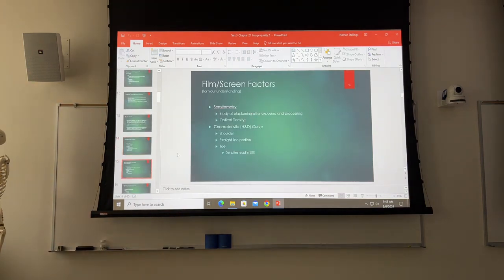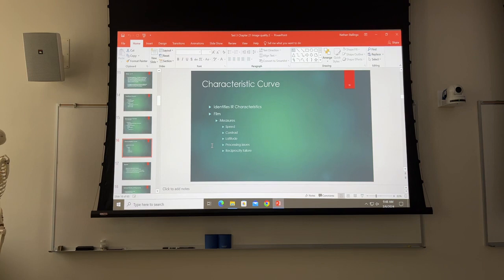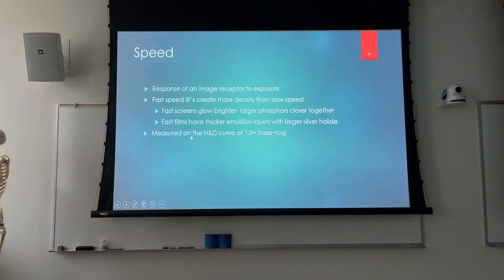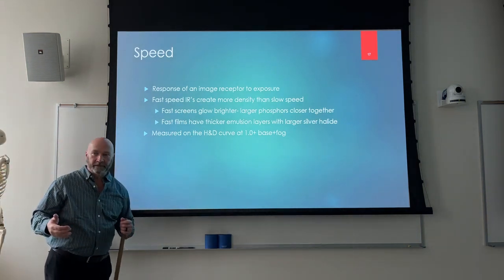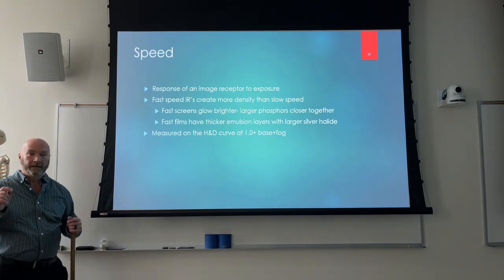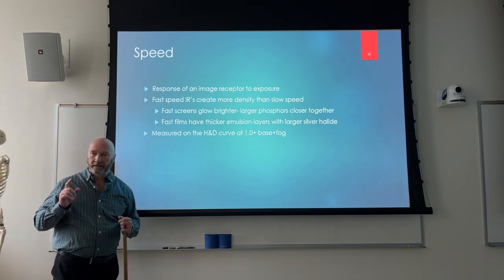The H&D curve measures speed, contrast, and latitude (which is really grayscale). Image receptor speed refers to sensitivity — high speed means it doesn't need much exposure; low speed means it needs quite a bit. If you make an exposure on a high-speed system with a low-speed technique, the result is greatly overexposed. If comparing two systems for which is more likely to give quantum mottle, the answer is high speed — because to avoid overexposure on a high-speed system, you'd lower your mass, which can introduce quantum mottle.